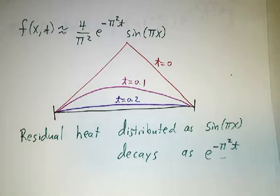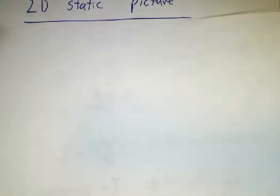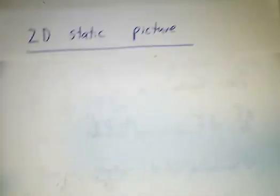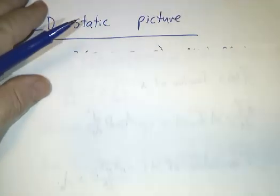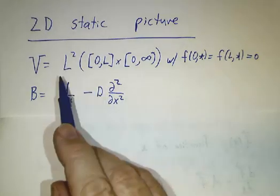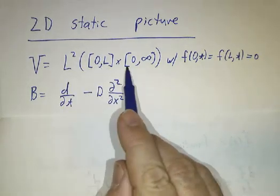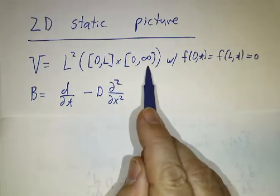Now we've done this all from the dynamic perspective. Thinking of a function of x and t as a function of x that evolves in time. You can also look at it from the static perspective. From the static perspective, we're looking at functions on the interval from zero to l, cross times that go from zero to infinity.